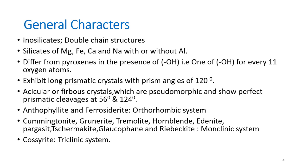Coming to the general characters. Amphiboles belong to inosilicates with double chain structures, and they are silicates of magnesium, iron, calcium, and sodium with or without aluminium. They differ from pyroxenes in the presence of OH — one OH for every 11 oxygen atoms. They exhibit long prismatic crystals with prism angles of 120 degrees and acicular or fibrous crystal habit. They show perfect prismatic cleavages at 56 and 124 degrees. Anthophyllite and ferrosyderite belong to the orthorhombic system; cummingtonite, grunerite, tremolite, actinolite, hornblende, adenite, glaucophane, riebeckite, shermakite, and paraxite all belong to the monoclinic system, while caucerite belongs to the triclinic system.